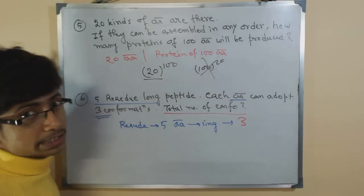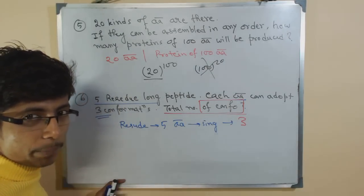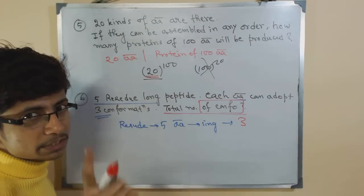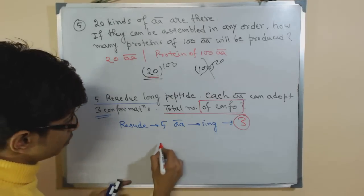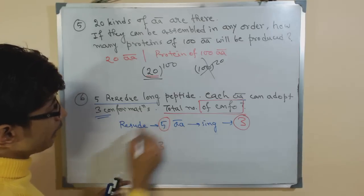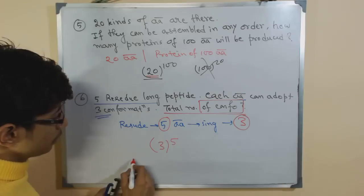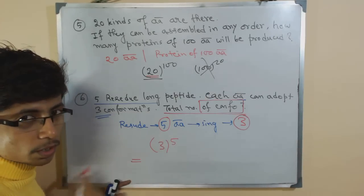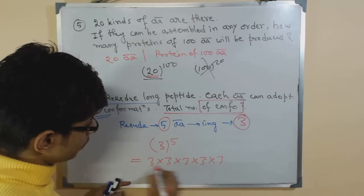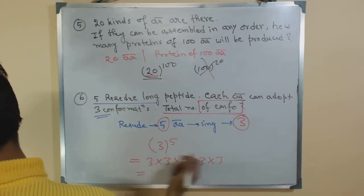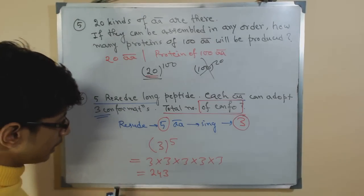The important thing is that whatever value they ask about should be placed as the main base value. In this case it is three conformations, so three is the base, and the number of residues is five, so the power is five — giving us 3 to the power 5. That is three times three times three times three times three, and the answer is 243.